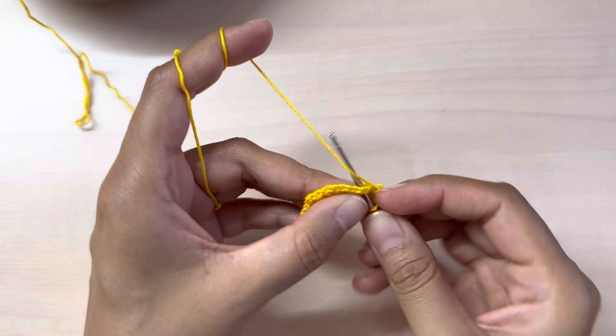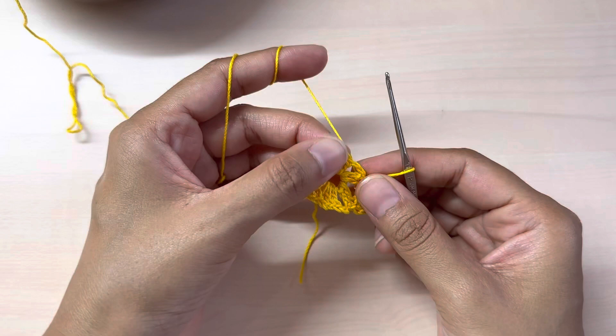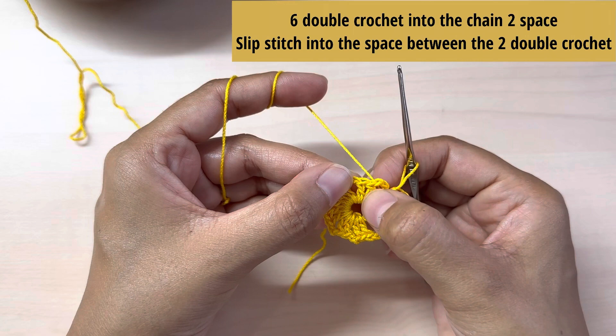And you want to repeat that all around. Six double crochet into the chain two space, slip stitch into the space between the two double crochet. So do that all around and I'll meet you here.